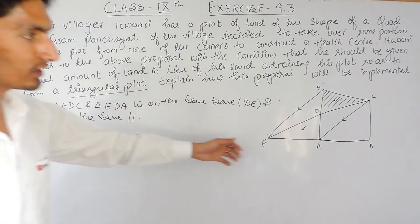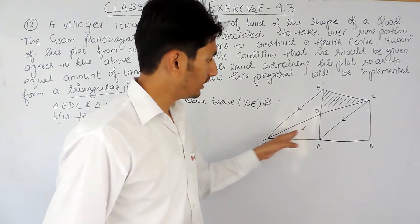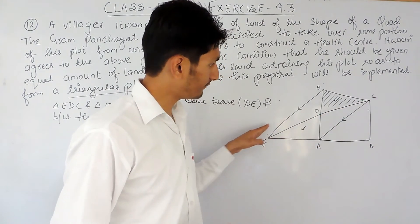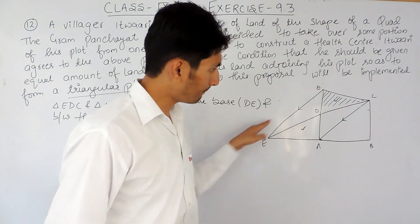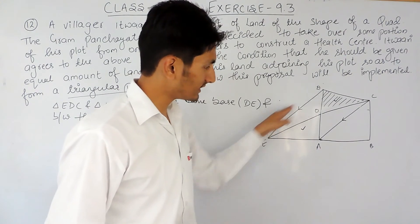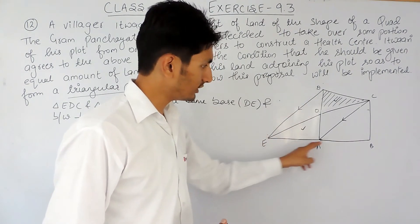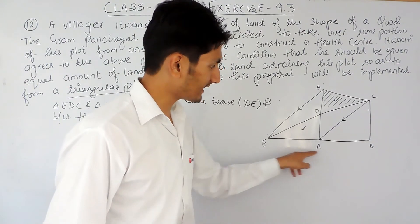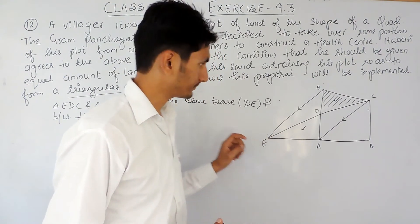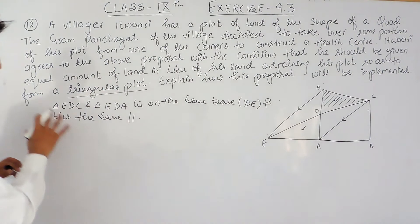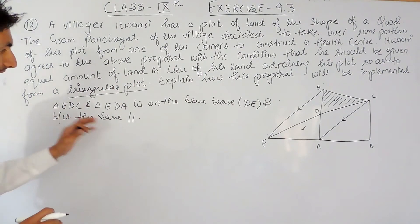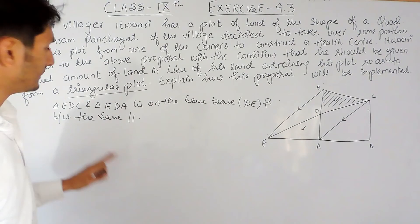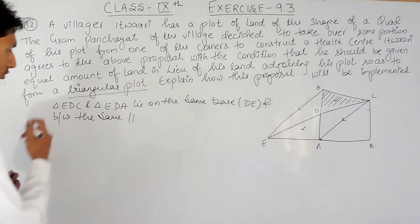Before that, you have to write the construction: you have joined AC and then drawn a line parallel to AC from D, meeting the line AB extended at point E. After that, you write that triangle EDC and triangle EDA both lie on the same base and between the same parallels, so according to the theorem their areas are equal.